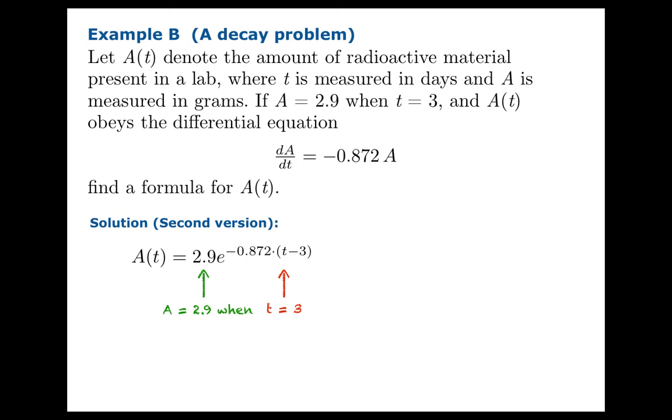Well, notice that A winds up equaling 2.9 in this formula precisely when t equals 3. Well, that was the condition we were told. And you can do a little algebra. Simple algebra will tell you that dA/dt is still equal to negative 0.872 times A. In other words, it's a solution to the differential equation.